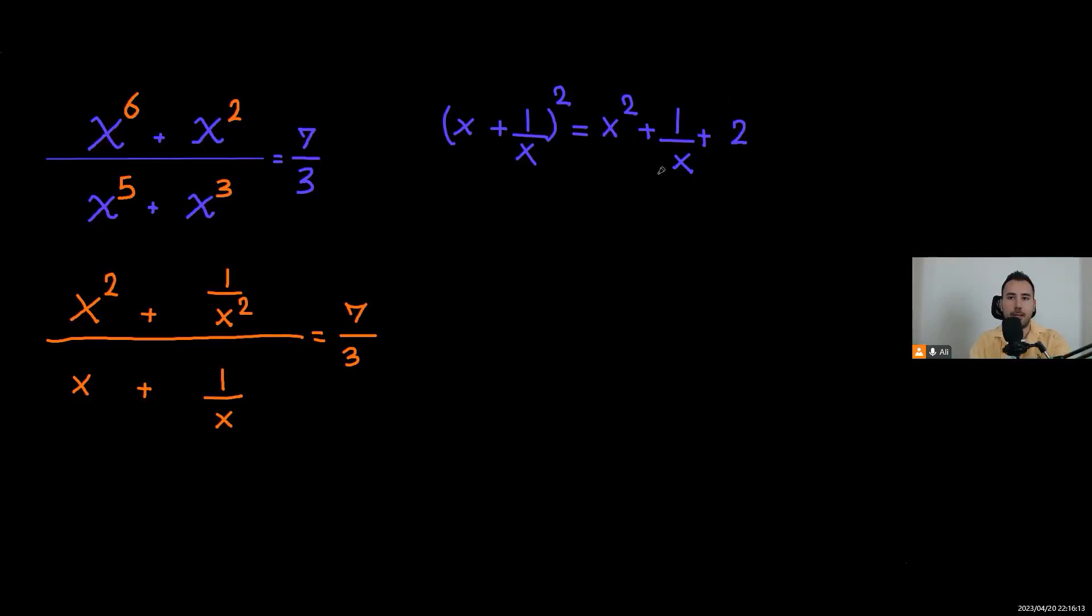Now this is what we have here. I'm gonna move this term and negative two to the other side, so the equation would be: instead of numerator, I'm gonna write x plus one over x squared, and this would be two more than this, so I will minus it by two.